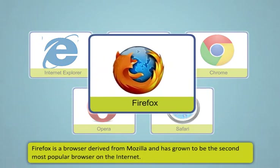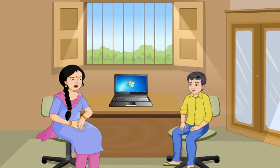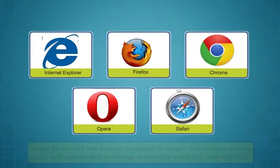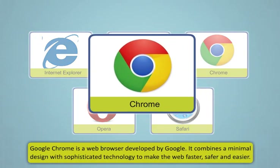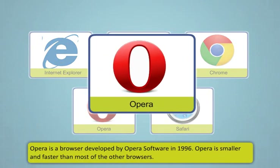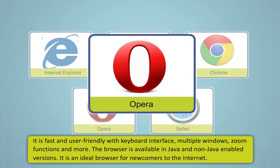Firefox is a browser derived from Mozilla and has grown to be the second most popular browser on the internet. Google Chrome is a web browser developed by Google. It combines a minimal design with sophisticated technology to make the web faster, safer and easier. Opera is a browser developed by Opera software in 1996. Opera is smaller and faster than most of the other browsers. It is fast and user-friendly with keyboard interface, multiple windows, zoom functions and more. The browser is available in Java and non-Java enabled versions. It is an ideal browser for newcomers to the internet.